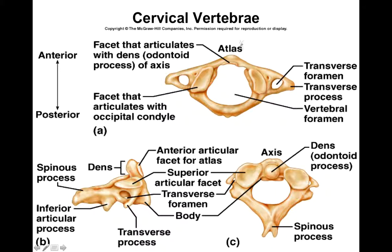There are two special cervical vertebrae. There's the atlas, which is C1. I remember Atlas — the man from Greek mythology who held up the world — so the atlas holds up your world. The atlas is the inferior articulation for the occipital bone; these are the facets that articulate with the occipital bone and hold up your skull. The atlas doesn't have a body, and it also does not have a spinous process.